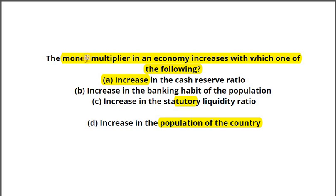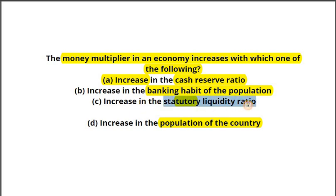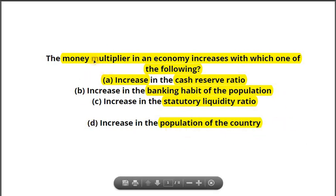Hello everyone, welcome back to the channel. Let's get on to solving the multiple choice questions for Prelims 2020. Question number one: the money multiplier in an economy increases with which of the following? One, increase in the cash reserve ratio; two, increase in the banking habit of the people; three, increase in the SLR or statutory liquidity ratio; and four, increase in the population of the country.